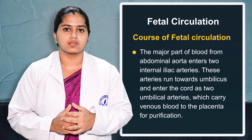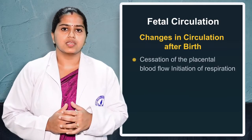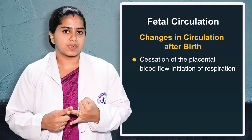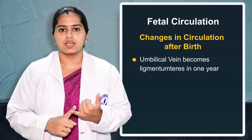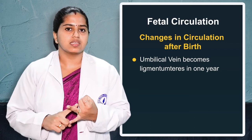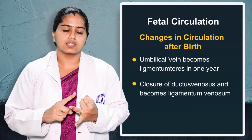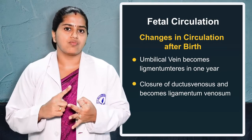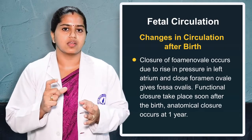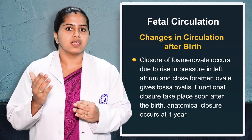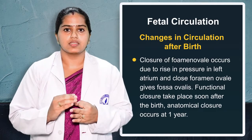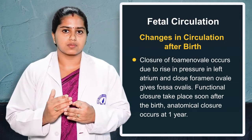Next we will see what changes take place after birth. Immediately after birth, due to the stoppage of blood from the placenta and the initiation of respiration, some changes take place. First, the umbilical vein changes to the ligamentum teres. Second, the ductus venosus changes to the ligamentum venosum. Third, the foramen ovale undergoes functional closure due to the pressure gradient — oxygenated blood is now more in the left atrium than the right — leading to the fossa ovale, with anatomical closure within one year.